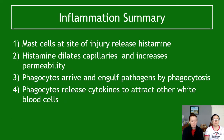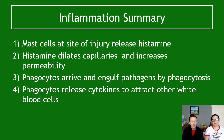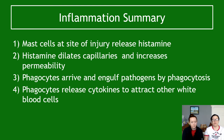To summarise inflammation: first, mast cells arrive at the site of injury and release histamine. Histamine dilates the capillaries and increases their permeability. Phagocytes then arrive and engulf the pathogen via phagocytosis, while also releasing cytokines to attract other white blood cells. Platelets also arrive as clotting factors, releasing clotting factors that drive the cascade: prothrombin to thrombin, and fibrinogen to fibrin, repairing any damage to capillaries. That completes the non-specific immune response.